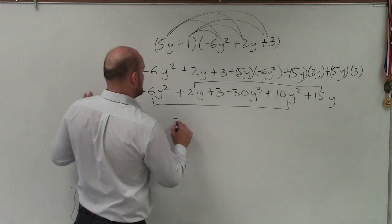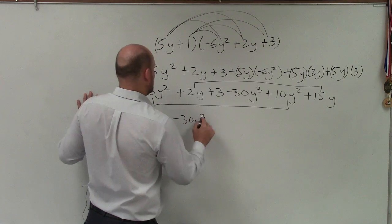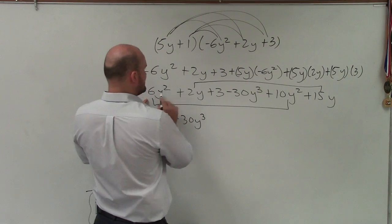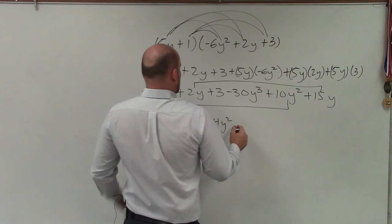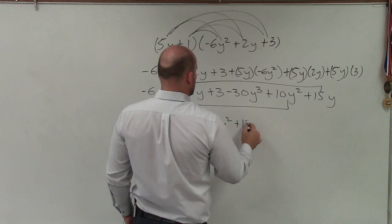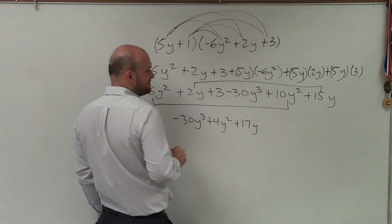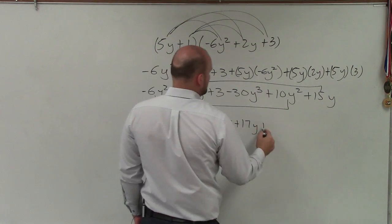So now I'm going to write in descending order, which I'll have negative 30y cubed. And negative 6y squared plus 10y squared is going to be a positive 4y squared plus 17y. 2y plus 15y is 17y plus 3.